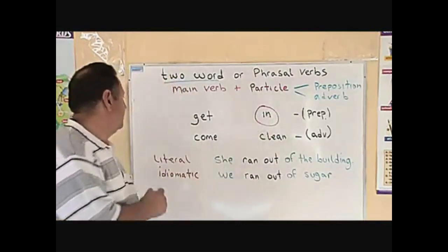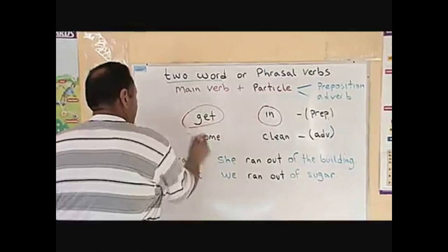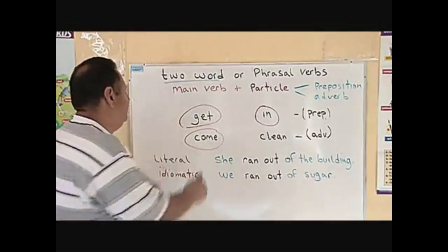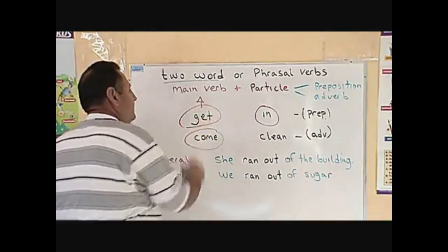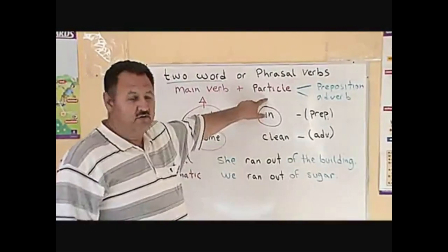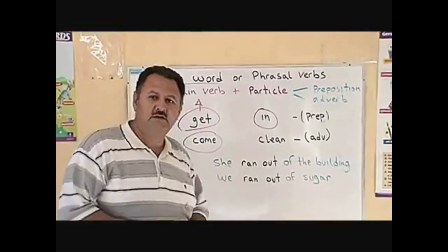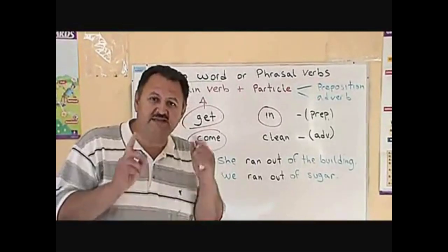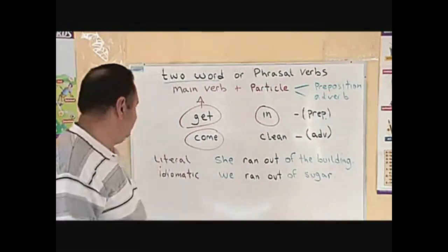So get and come is the main verb. In, clean, preposition and an adverb, that's the particle. The two words describe one action.